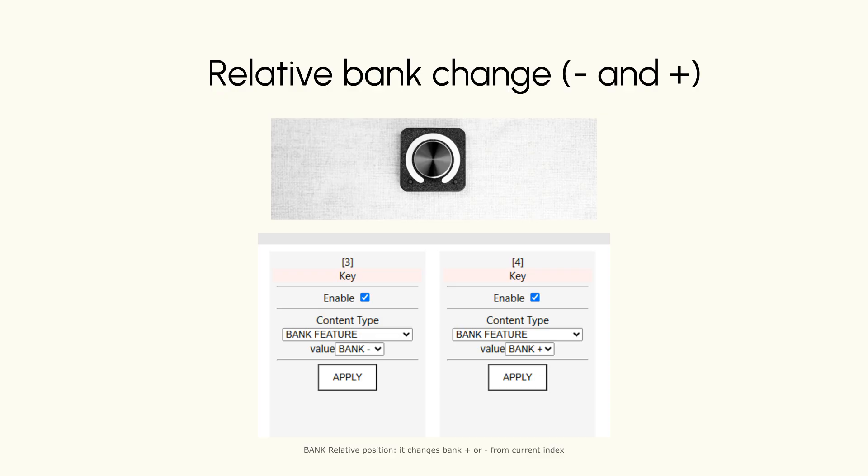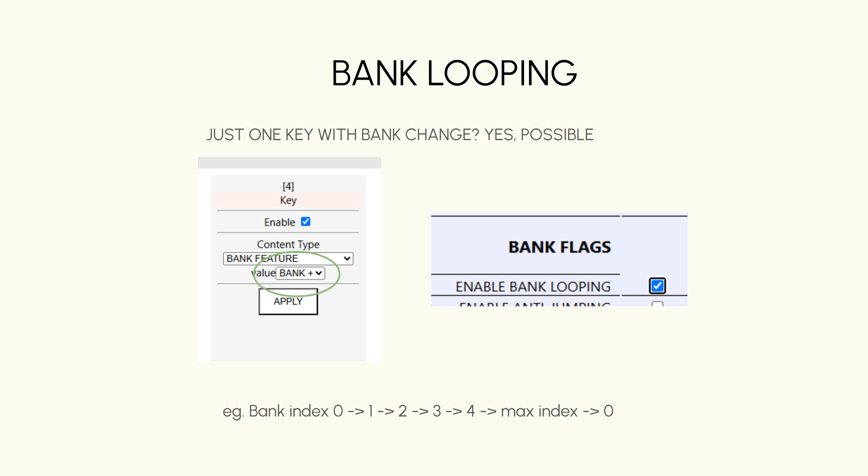Here's another example. This device has two keys below the knob. I set the left key as Bank Minus and the right key as Bank Plus. You can assign any key as Bank keys. If the device has only one key, you can set it as Bank Plus and enable the Bank Looping feature in the global setup. With Bank Looping enabled, once the bank index reaches the maximum index, it will automatically start from zero again.